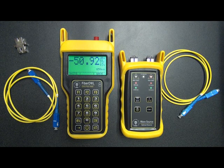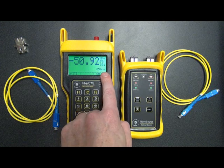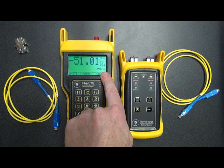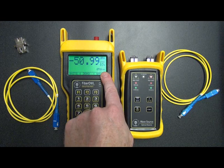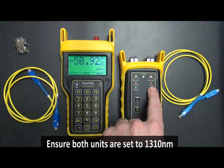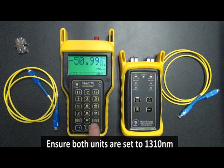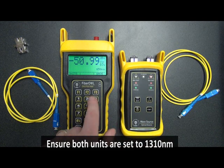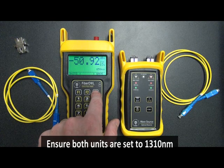You'll notice that the wavelength is set to 850 nanometers. Since we're going to be checking single mode, we need to switch to the single mode wavelength. So the light source is set to 1310 nanometers, so we also need to switch the wavelength on the Fiber Owl. We do this by pressing F3.